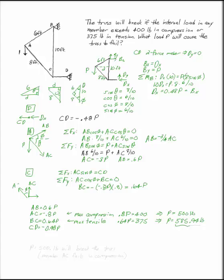Well, you can't get to this because as soon as you've gotten to P equals 500 pounds, you broke the truss. So the answer to my question is 500 pounds will break the truss or cause the truss to fail. Specifically, member AC fails in compression.